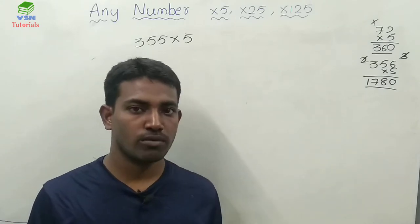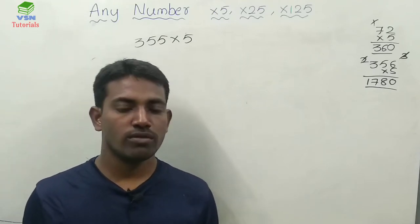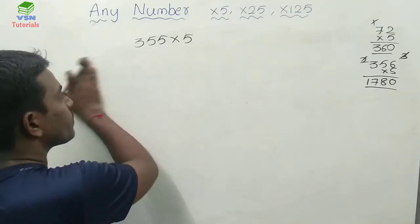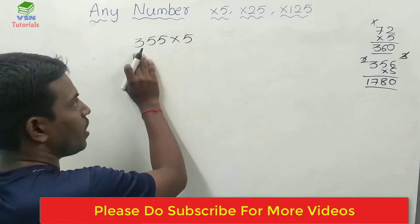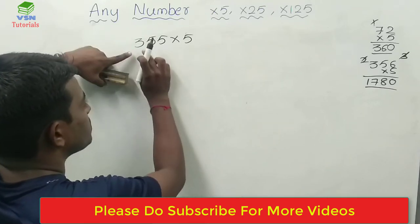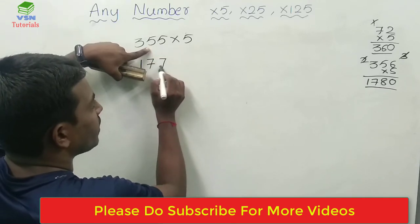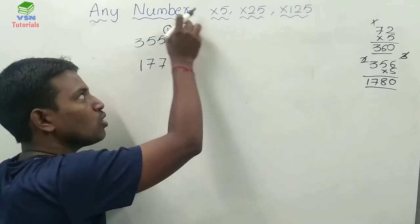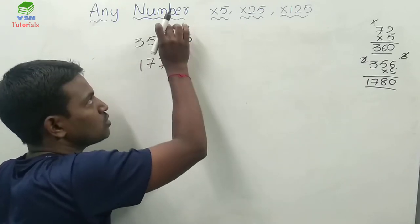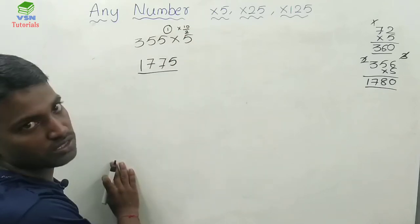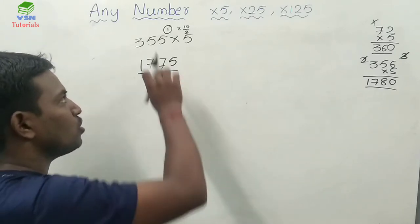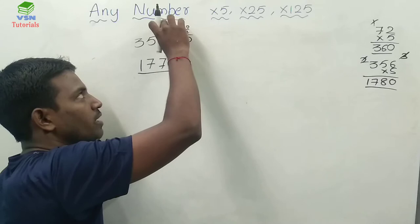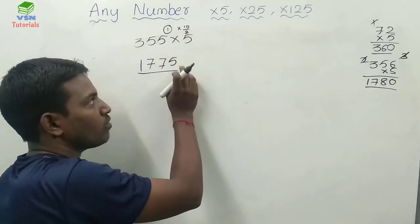An odd number is not exactly divisible by 2 — you will definitely get a remainder of 1. Whenever you get the remainder as 1, apply the same logic: divide the number by 2. Here, 355 divided by 2 gives 177 with remainder 1. The remainder 1, multiplied by 10, gives 10. And 10 divided by 2 is 5. So you add 5 at the end, giving 1775. That is the only change.